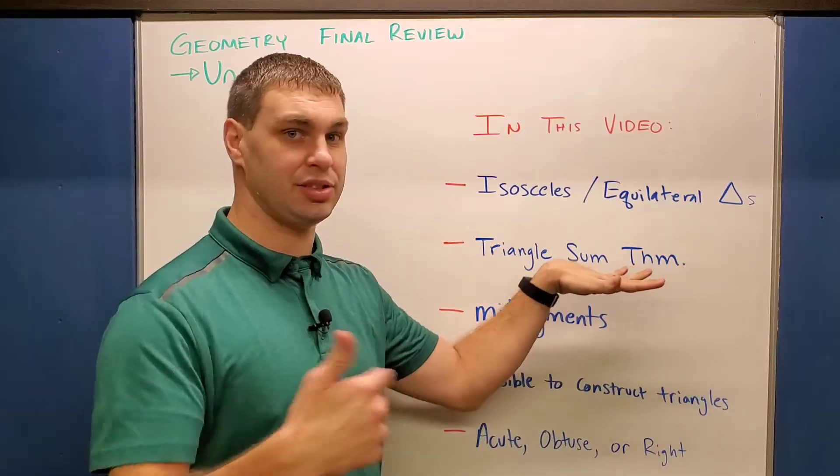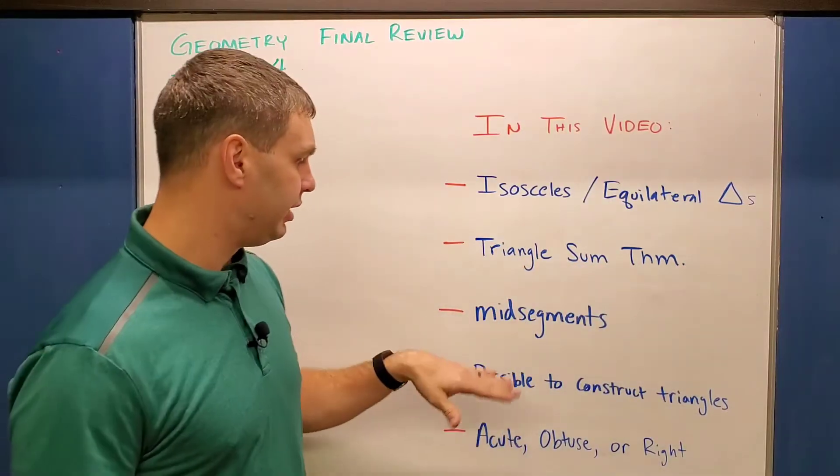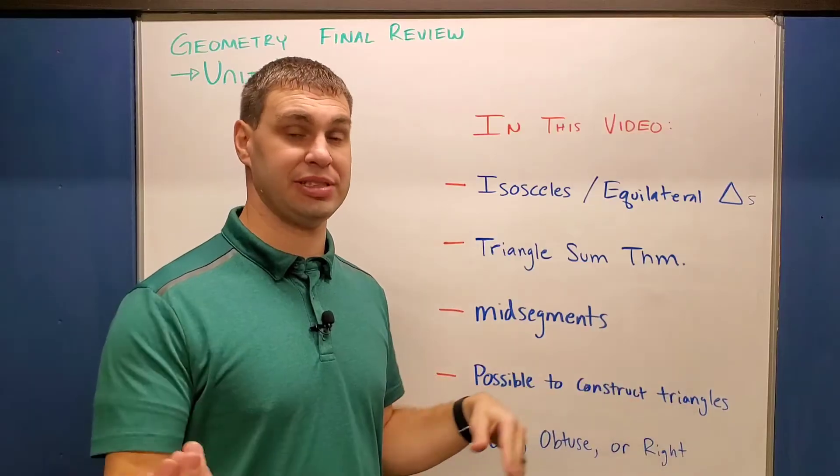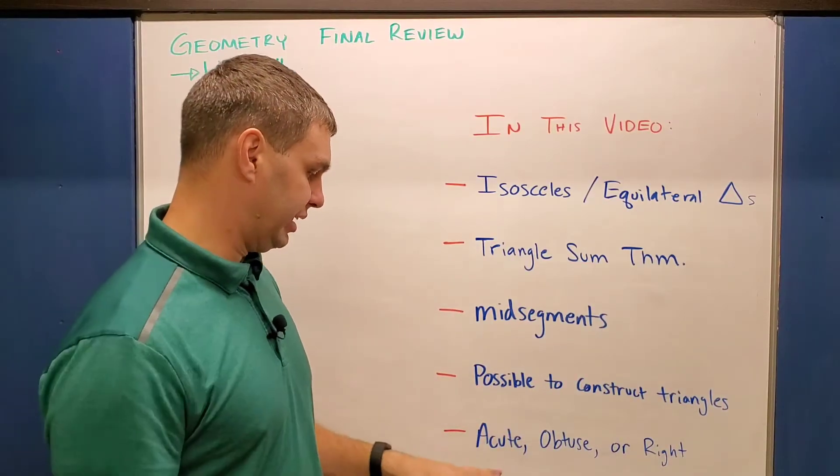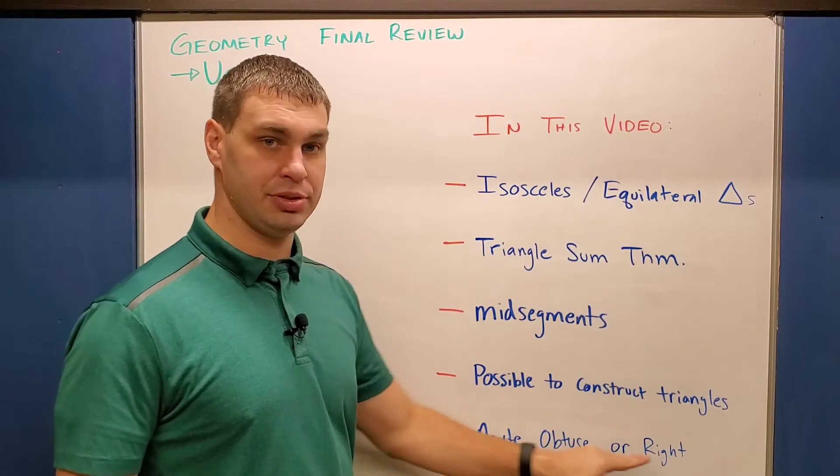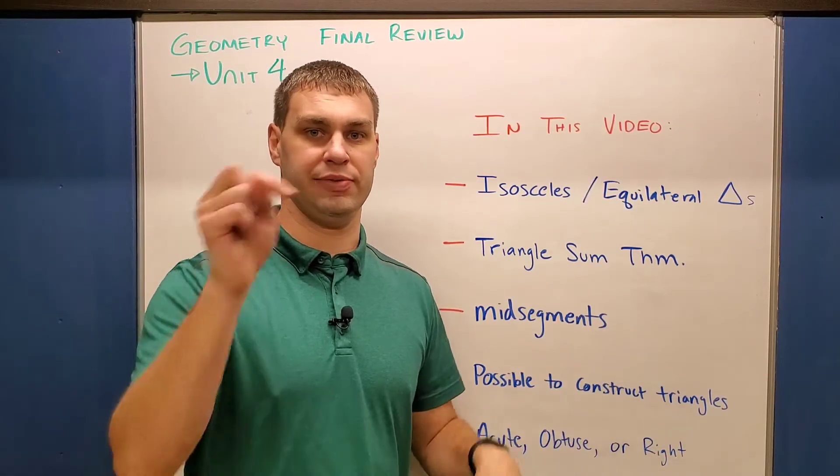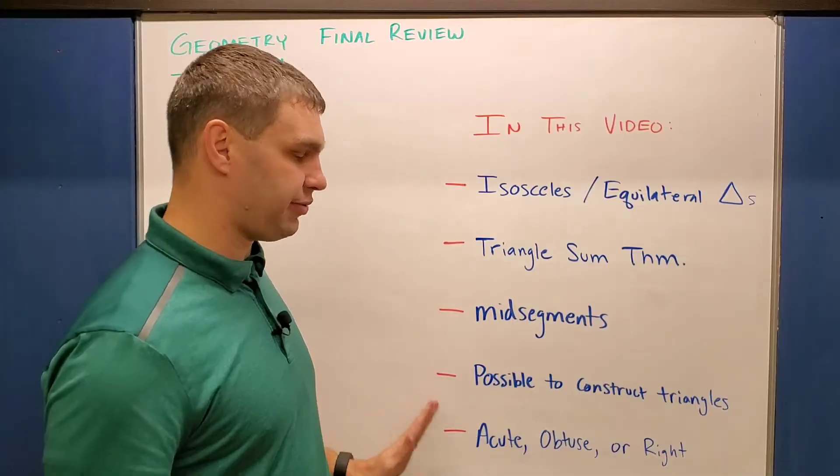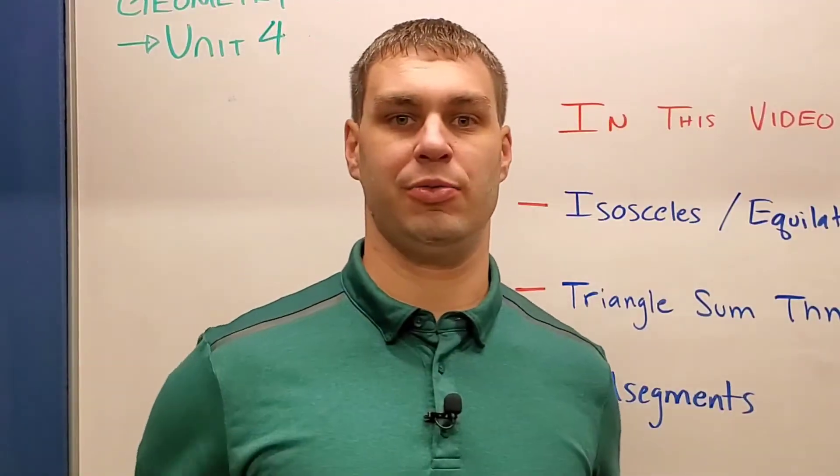The triangle sum theorem that's where the insides all add up to be 180 degrees. We're going to go over mid segments, decide if it's possible to construct triangles given some side lengths, and decide if a triangle is acute, obtuse, or right all in this video. In the video player down below, you can drag the bar to whichever part you need. Otherwise let's get right into it.